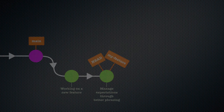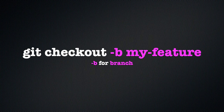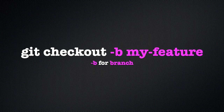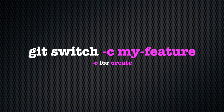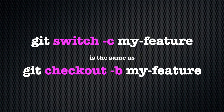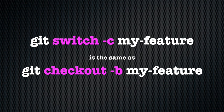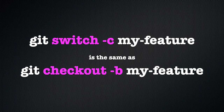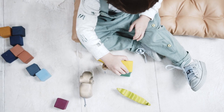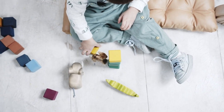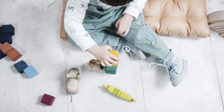One bonus feature that git checkout has up its sleeve is that it can also create branches. To do so, use the -b flag followed by the branch name. So when we used git switch -c my-feature earlier to create a branch with git switch and its -c flag for create, we could have also run git checkout -b my-feature instead. The result would have been exactly the same, but ultimately only git branch can create a branch. All these other commands just reuse the same trick by calling git branch under the hood.